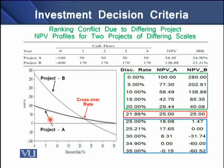The point where the two projects' NPVs cross each other is termed the crossover rate. This crossover rate is 21.86%, at which both projects have an equal NPV. Before this discount rate, Project B has a higher NPV over Project A, and beyond this discount rate, Project A has a higher NPV than Project B.